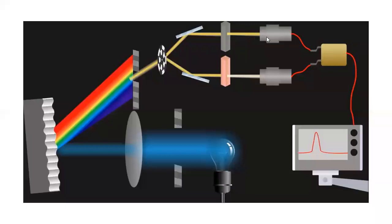Now the radiation comes from the cuvettes, and then you have two detectors — one for the reference and one for the sample. That's why we have two cuvettes and two detectors. The detectors used in a spectrophotometer have three main types, which I will explain.